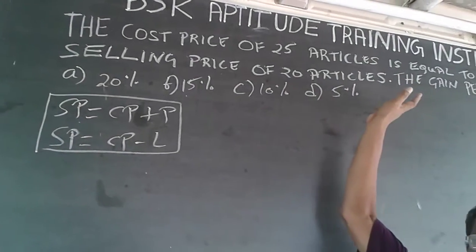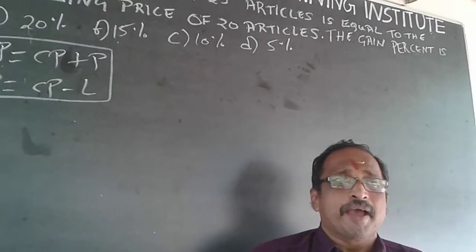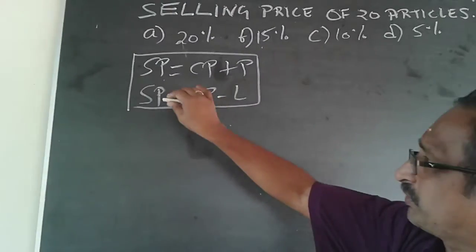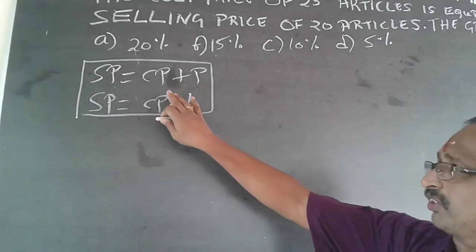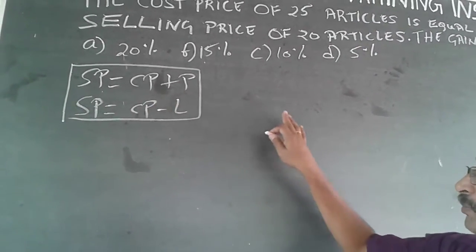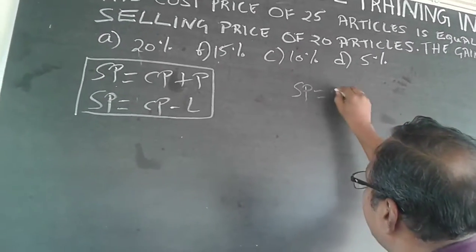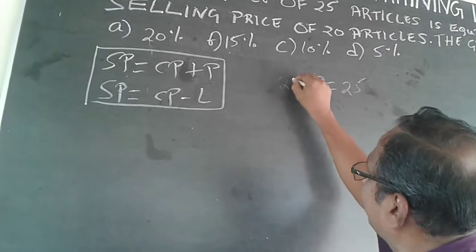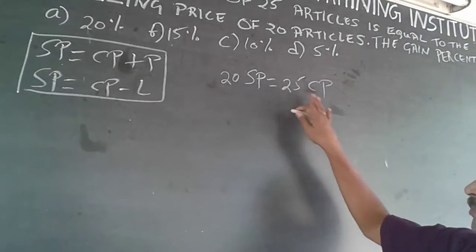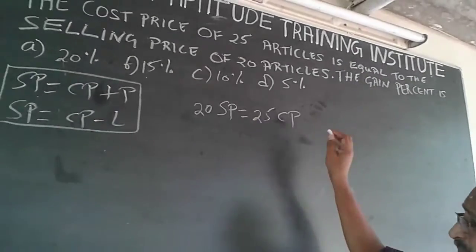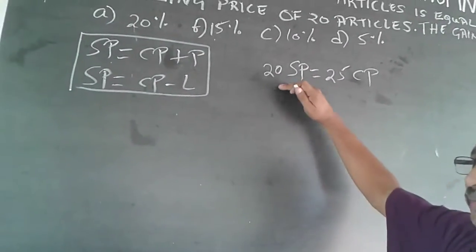Here, it is stated that the cost price of 25 articles equals the selling price of 20 articles, which implies he is making a profit. Applying the formula — selling price equals cost price plus profit — we write: 20 SP = 25 CP.